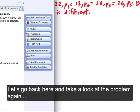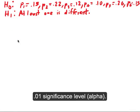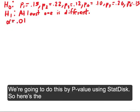Let's go back here, take a look at the problem again. Those were the claims. And then we're going to use a 0.01 significance level. I guess we'll write that down. Alpha is 0.01. We're going to do this by p-value using StatDisk.